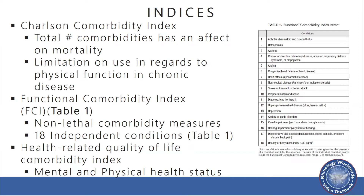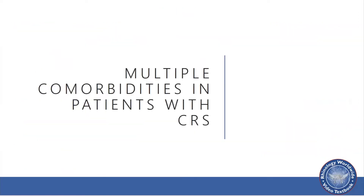Another is a health-related quality of life comorbidity index that looks at both mental and physical health status. The health-related quality of life comorbidity index has not been used within CRS literature, whereas the Charlson and the Functional Comorbidity Index have.